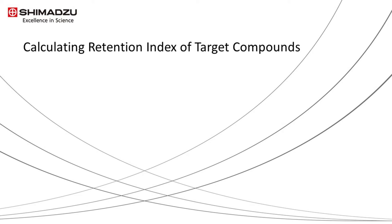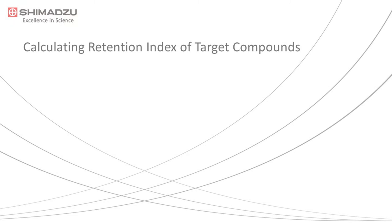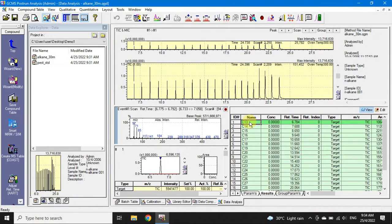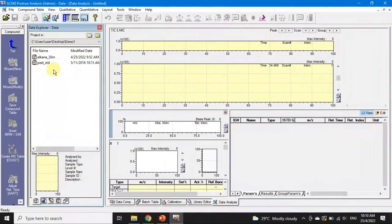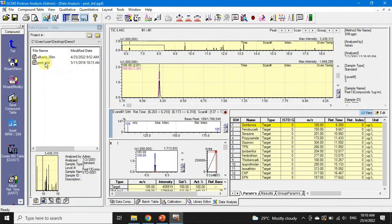This standard solution is a mixture of hydrocarbons ranging from C7 to C33. The retention index of target compounds needs to be calculated before performing AART in GCMS Solution — this step can be skipped if the method file already contains the retention index information. The n-alkane standard sample is first injected and analyzed using the standard or sample method file in GCMS. Once data acquisition is completed, load the n-alkane data file and check the result.